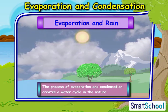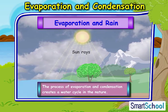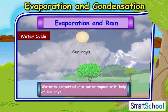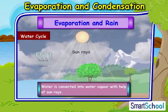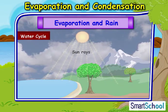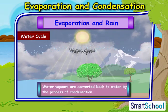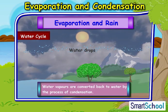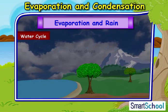Now let us understand the water cycle. Initially, the water is converted into water vapors with the help of sun rays. Due to the low temperature in the atmosphere, these water vapors are converted back to water by the process of condensation.